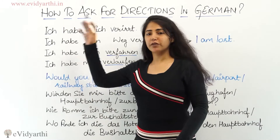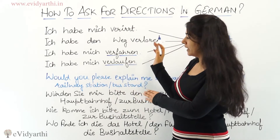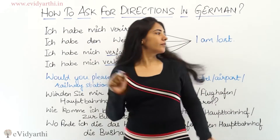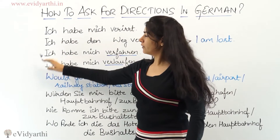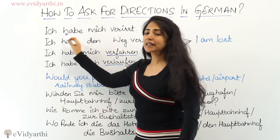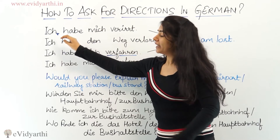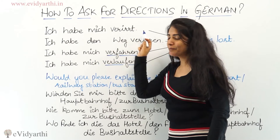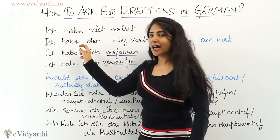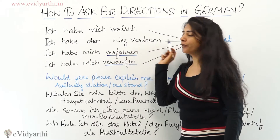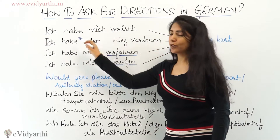So if you have lost your way, how to share this with a German person and how to ask for directions. If you want to say 'I am lost', there are different ways of saying so. The first one is 'Ich habe mich verirrt', which means 'I lost my way.' Or you can say 'Ich habe den Weg verloren', which also means 'I lost my way.'